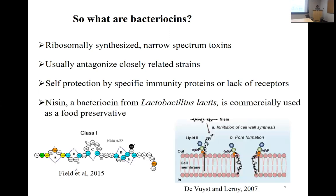Nisin is a well-known bacteriocin produced by the lactic acid bacterium Lactococcus lactis. It has been commercially used in food preservation — in cheese and meat industries — to suppress food-spoiling bacteria and some pathogens. Nisin is a 34-amino-acid peptide that, when it binds to target cells, inhibits cell wall synthesis and forms a pore causing membrane dissipation, eventually killing the cell.